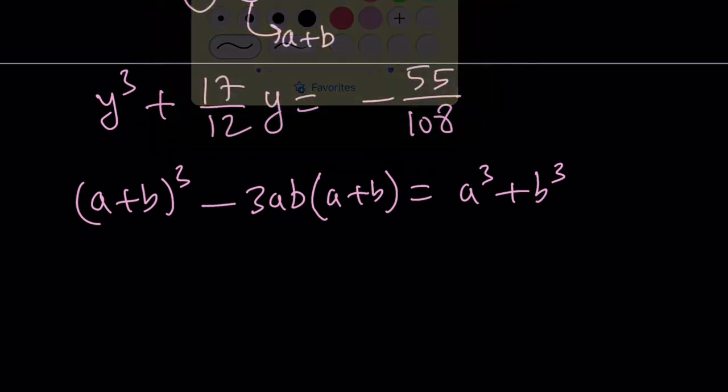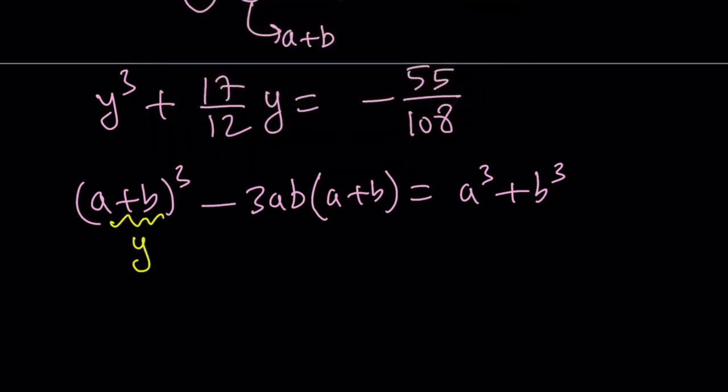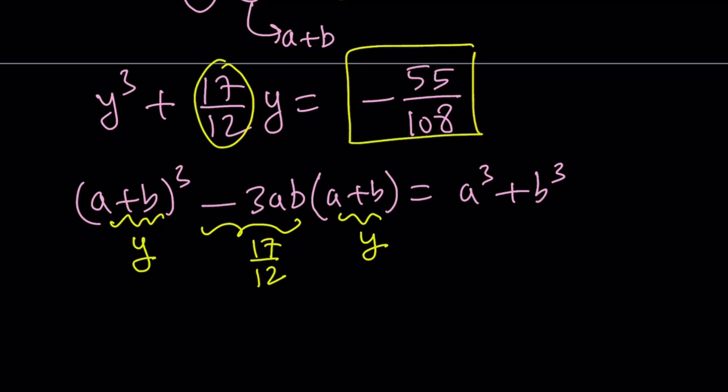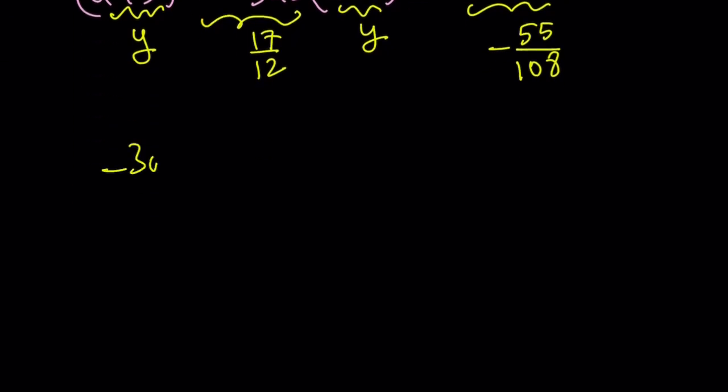And now we're going to compare these two equations. Remember, a plus b is y. So this is y and this is y. And the coefficient of y here is 17 over 12, which should equal this number. And the constant on the right-hand side is this number, which should equal this number or this quantity. So from here, we get the following. Negative 3ab equals 17 over 12, which means ab is equal to negative 17 over 36. And this means a cubed plus b cubed is equal to negative 55 over 108.